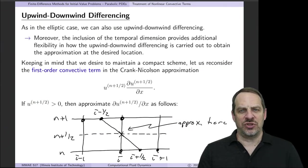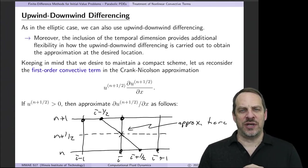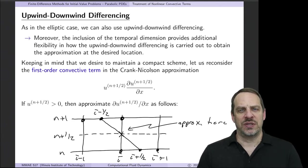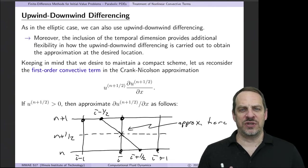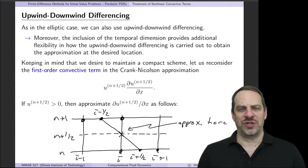We've been looking at the application of finite difference methods to parabolic partial differential equations. In the previous video, we looked at how to adapt implicit methods to equations that have nonlinear convective terms, such as the case in fluid mechanics and convective heat transfer. We looked at the first-order implicit method and the Crank-Nicholson method as applied to the unsteady one-dimensional Burger's equation.